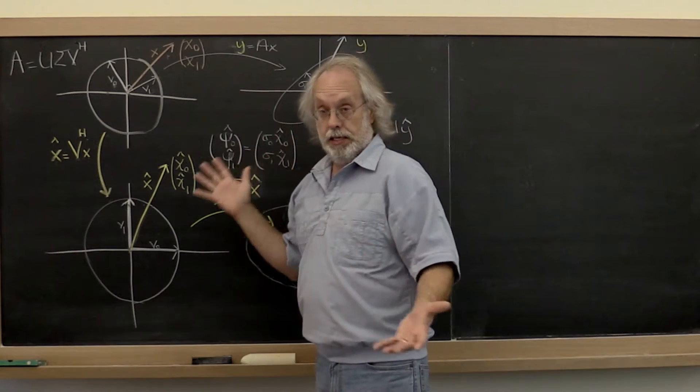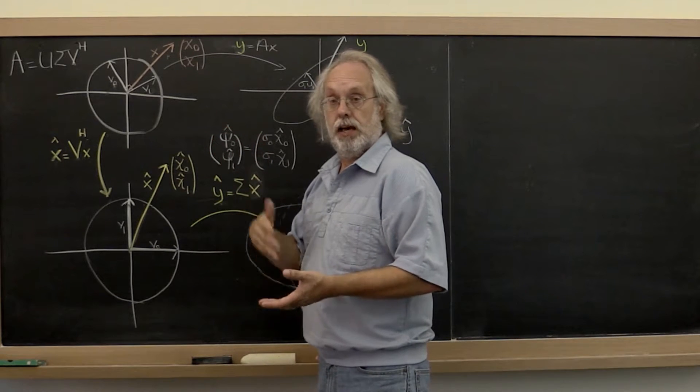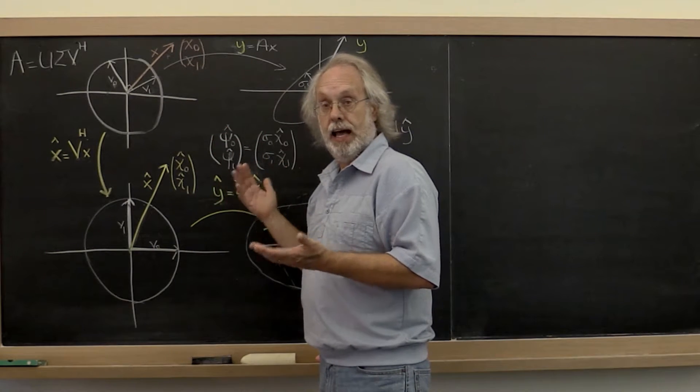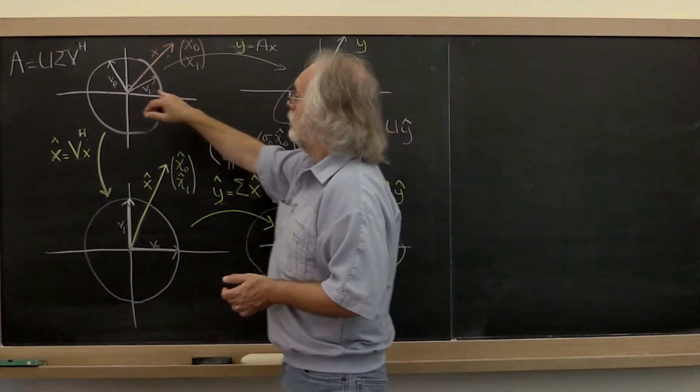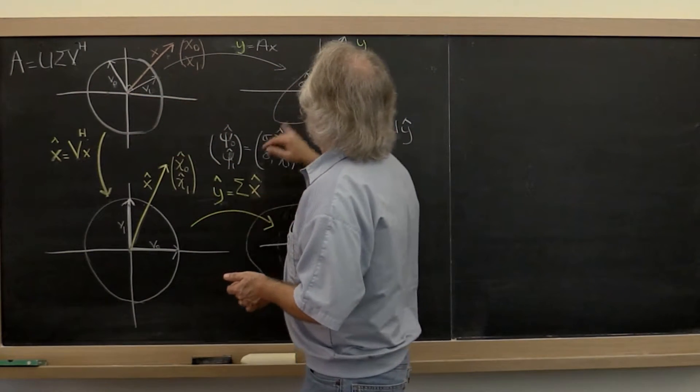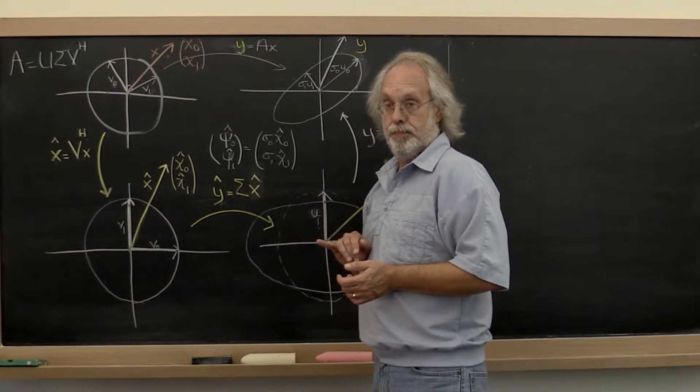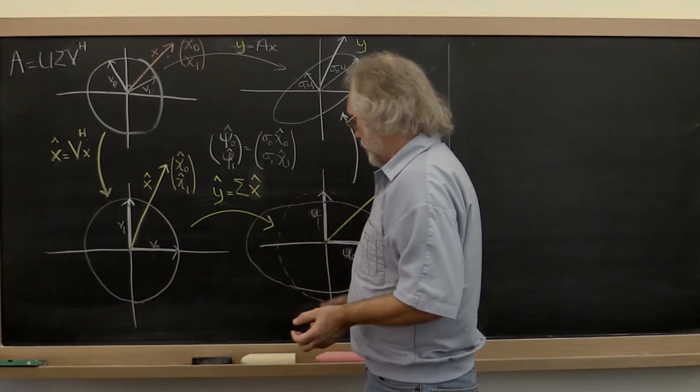We're doing this in general from C^m into C^n, but the pictures here capture it for when we go from R^2 to R^2. Now what's going on here?